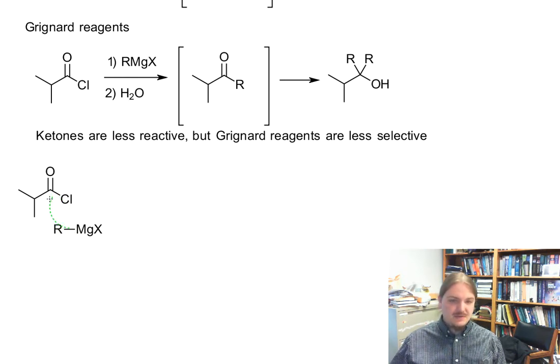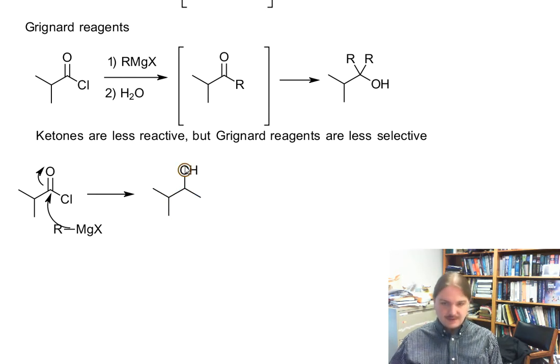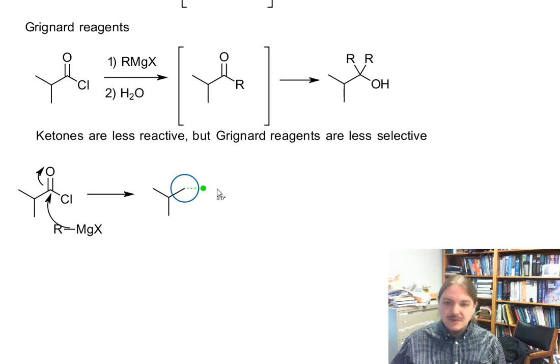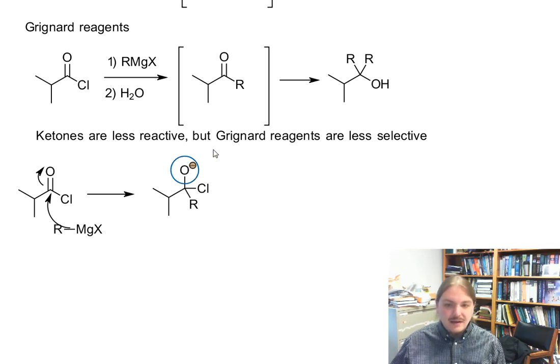This mechanism is going to follow the basic strong nucleophile version, where you form our chloride leaving group, we're going to need our nucleophile and a negative charge. And then we have loss of leaving group.